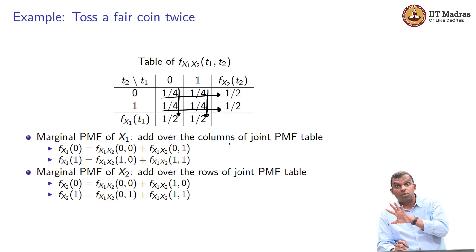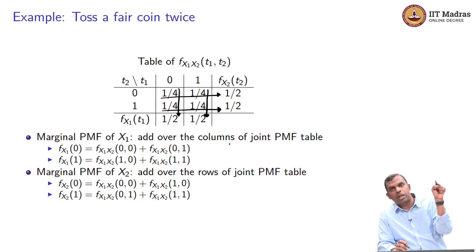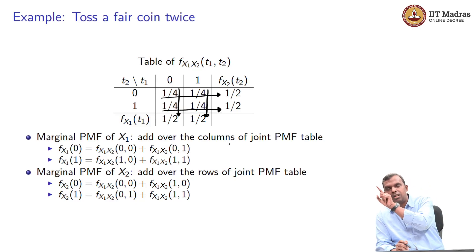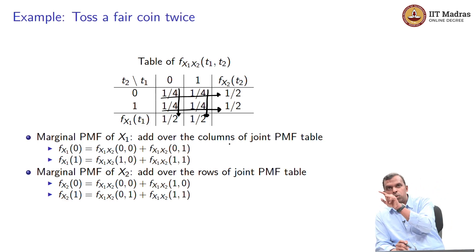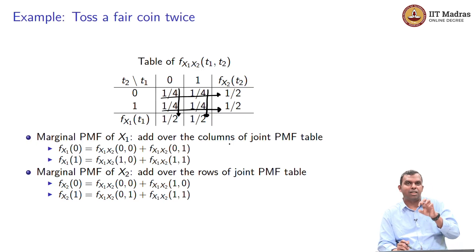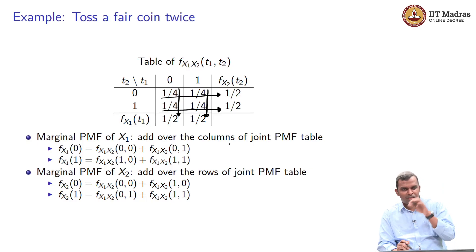Likewise, you add along the rows to get f_{X2}(t2): 1/4 + 1/4 = 1/2 each. So once you write down a joint PMF as a table, to marginalize you just sum over either the rows or the columns. Whatever variable varies along the rows — that is X1 — summing along a row gives the marginal of X2. Summing along a column gives the marginal of X1. Whatever remains fixed is the variable whose marginal PMF you get.